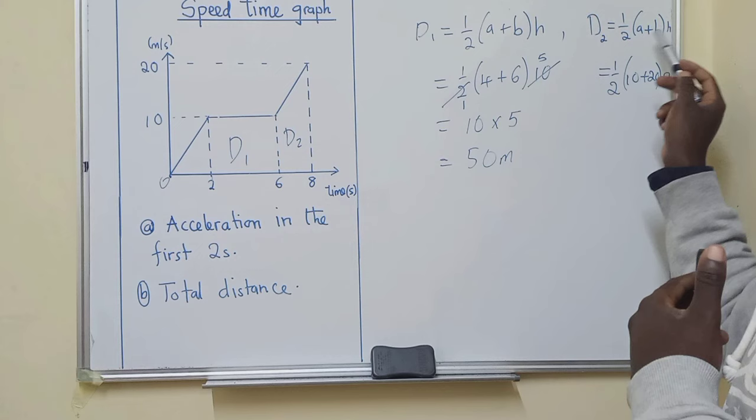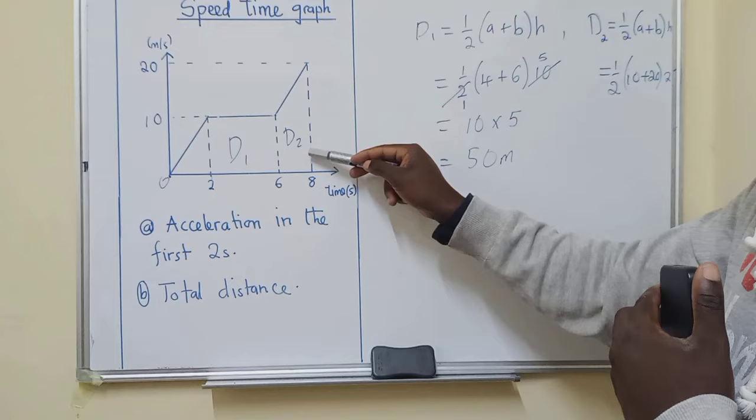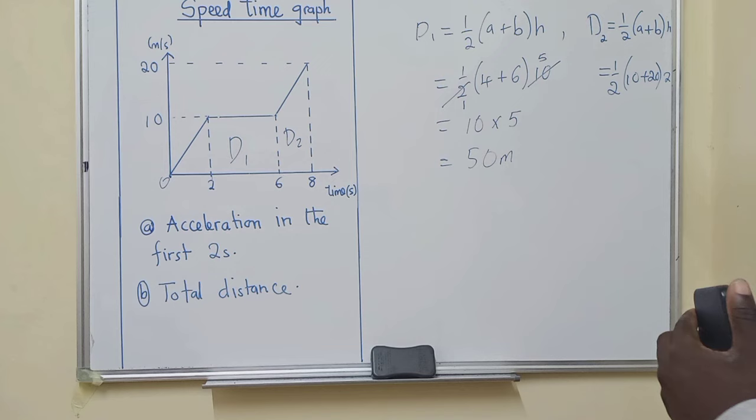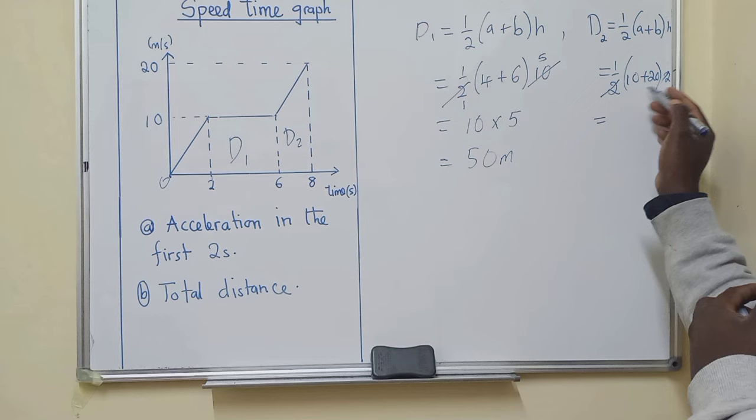And then the height now, it's the distance between two parallel lines from here to here. So what is the difference? There's 8, there's 6. So the difference from here to here is 2. So now these 2 and 2 can cancel because of the brackets. This shows that we are multiplying.